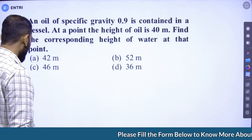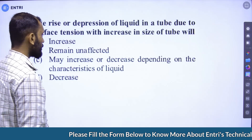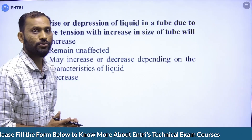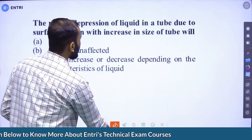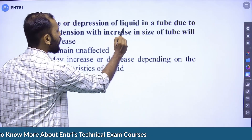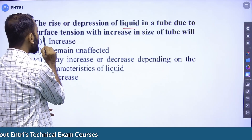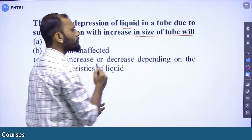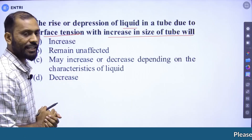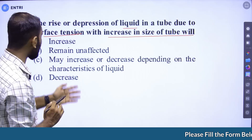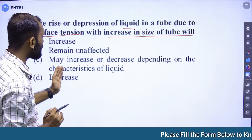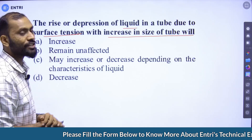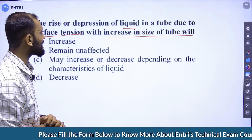Question: The rise or depression of a liquid in a tube due to surface tension — with increase in the size of the tube — will: Option A: increase; Option B: remain unaffected; Option C: may increase or decrease depending on liquid characteristics; Option D: decrease.